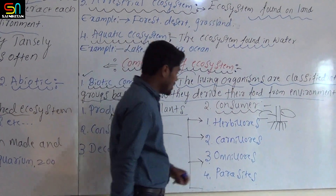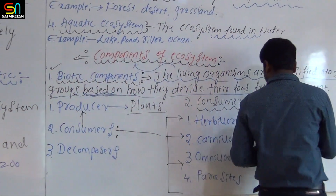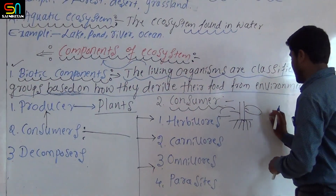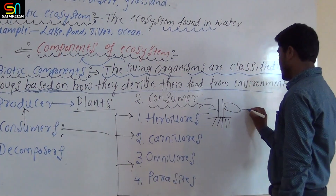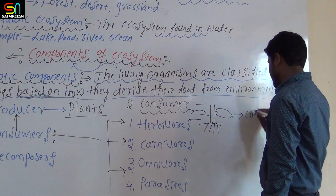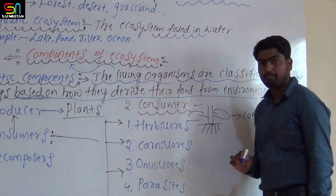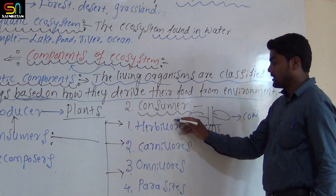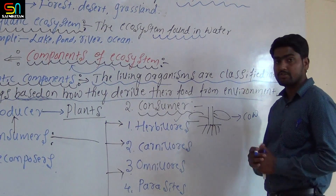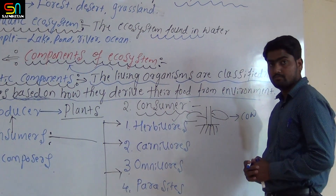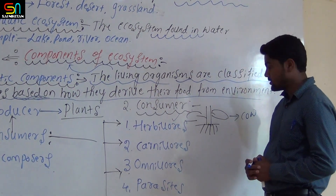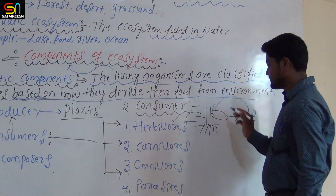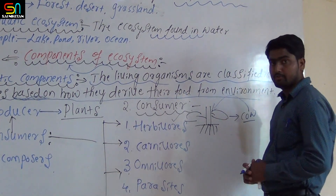The first group are herbivores — organisms which feed directly on plants. For example, a cow is a herbivore because it directly feeds on producers.